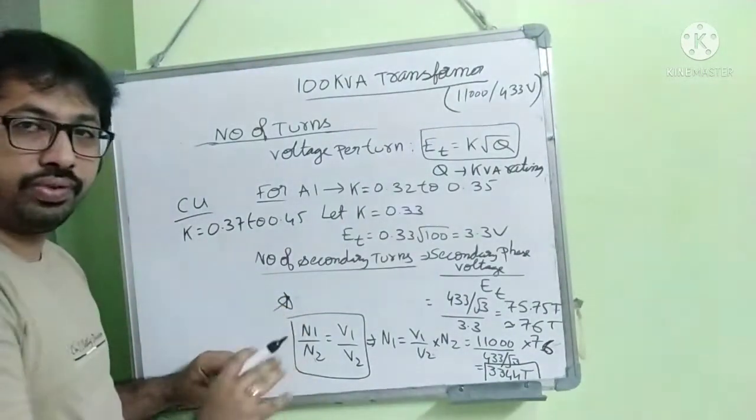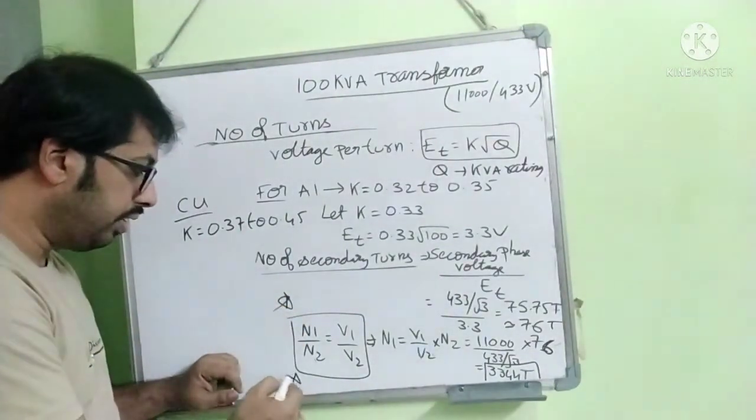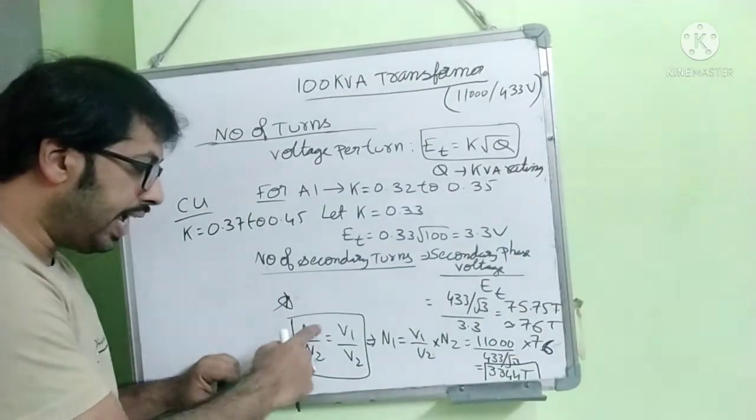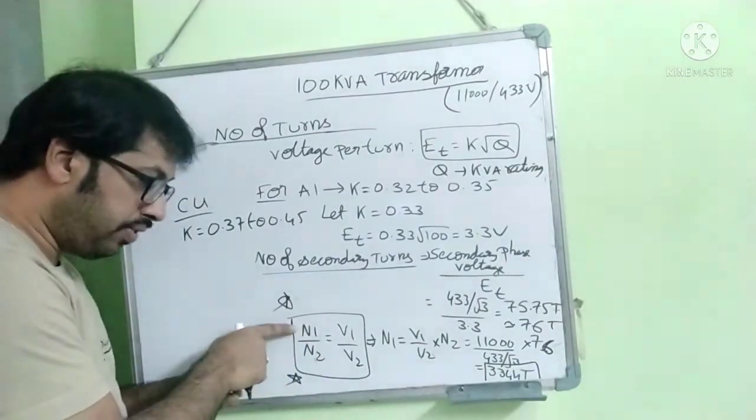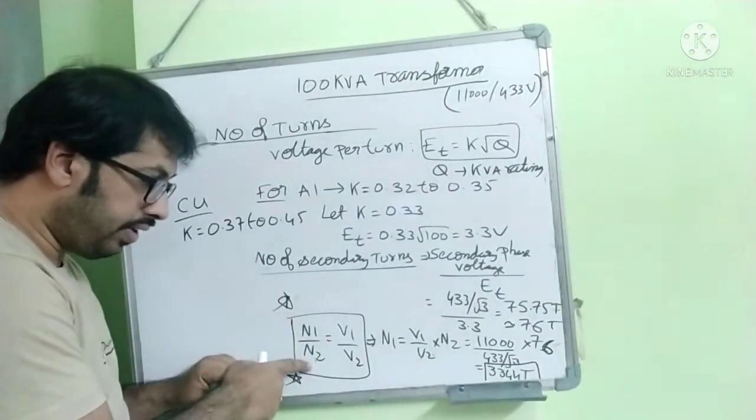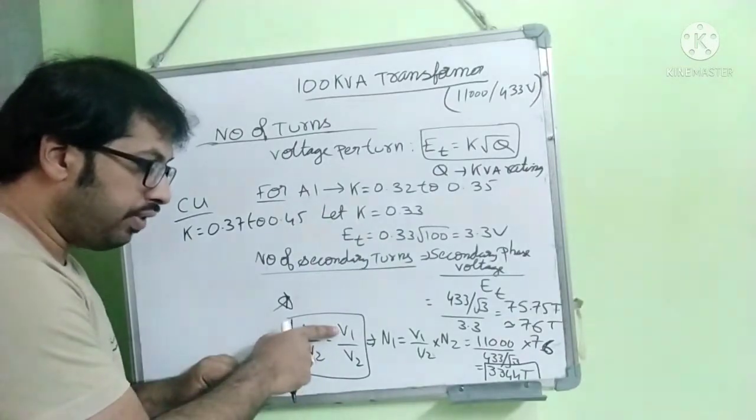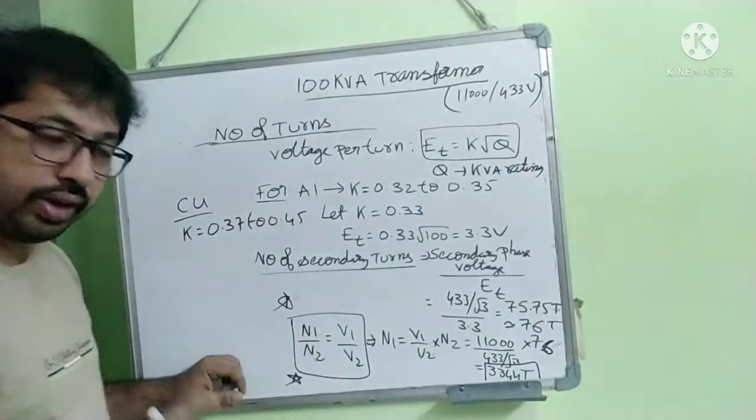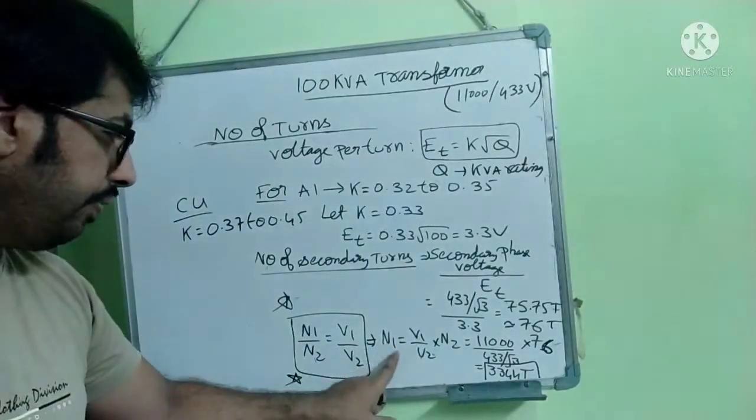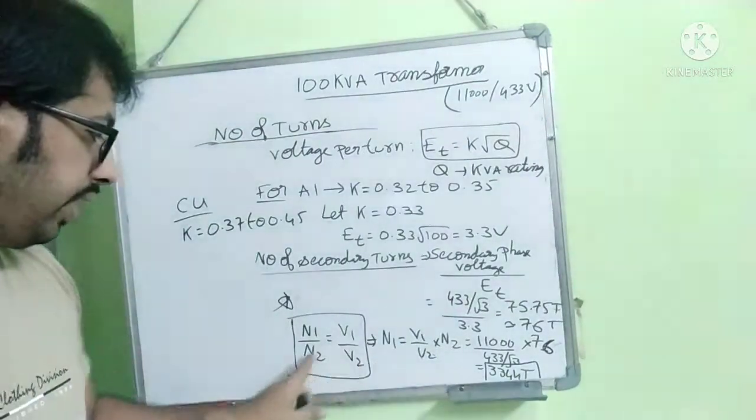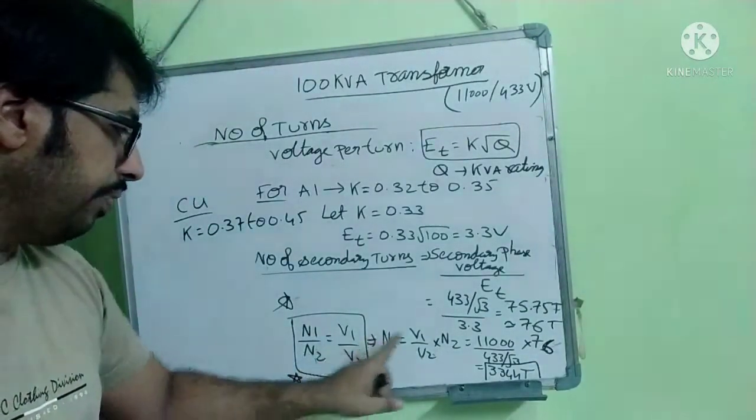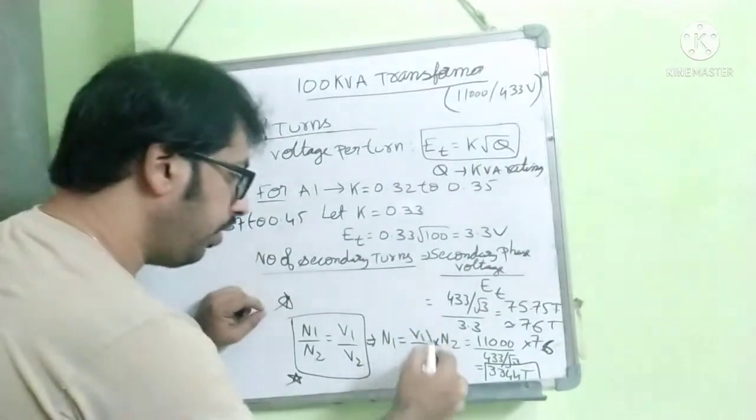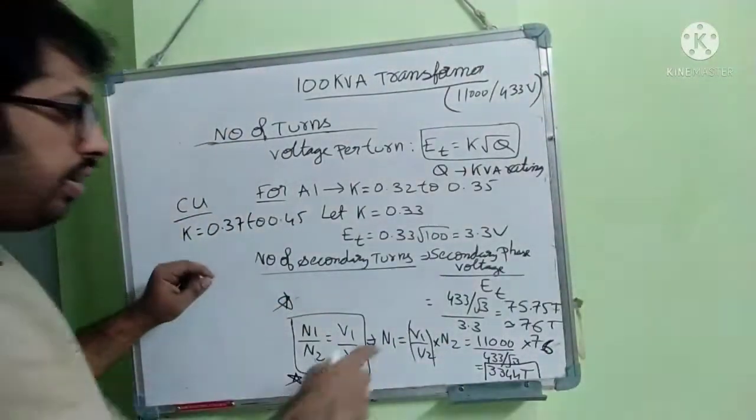Now we know the formula from these basics. In transformer, N1 by N2, number of turns in the primary winding to the number of turns in the secondary winding is equal to primary phase voltage by the secondary phase voltage. So from this, N1 is equal to V1 by V2 into N2.